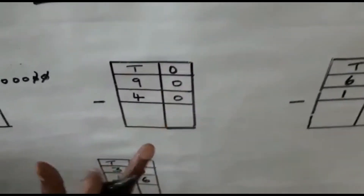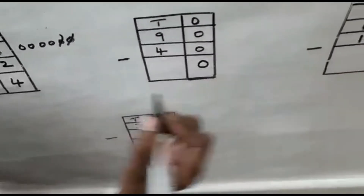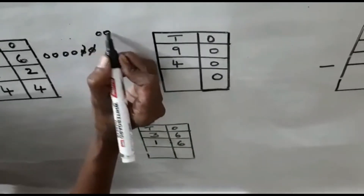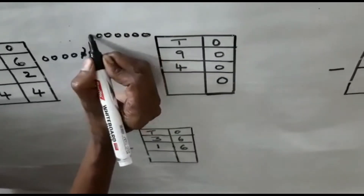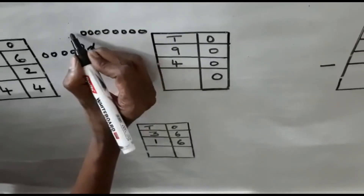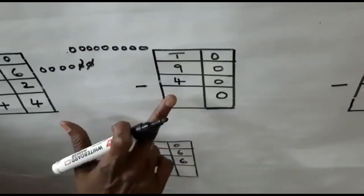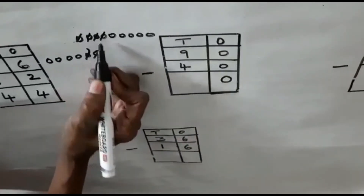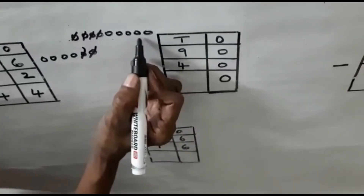0 minus 0 means 0 only. Now 9 minus 4: you must put 9 — 1, 2, 3, 4, 5, 6, 7, 8, 9. You should cancel 4: 1, 2, 3, 4. How many numbers are remaining? 1, 2, 3, 4, 5.